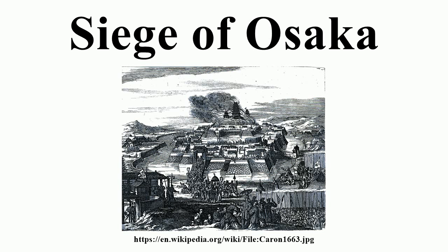Tensions began to grow between the Tokugawa and the Toyotomi clans, and only increased when Toyotomi Hideyori began to gather a force of ronin and enemies of the shogunate in Osaka. By November of that year, Ieyasu, despite having passed the title of shogun to his son in 1605, nevertheless maintained significant influence and decided not to let this force grow any larger, leading 164,000 men to Osaka. The siege began on 19 November, when Ieyasu led 3,000 men across the Kizu River, destroying the fort there.